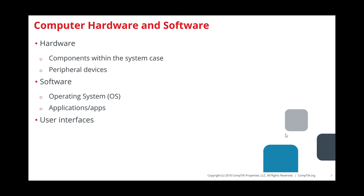Hardware is stuff that you can touch — physical things like keyboards, mice, hard drives, memory, and CPUs. Software is what we interact with as users — the operating system like Windows 7, 10, or 11 — or different applications like Word, Excel, PowerPoint, Photoshop, Google Chrome. Those are all different applications. When these two things combine, that's when you have an actual computer system.